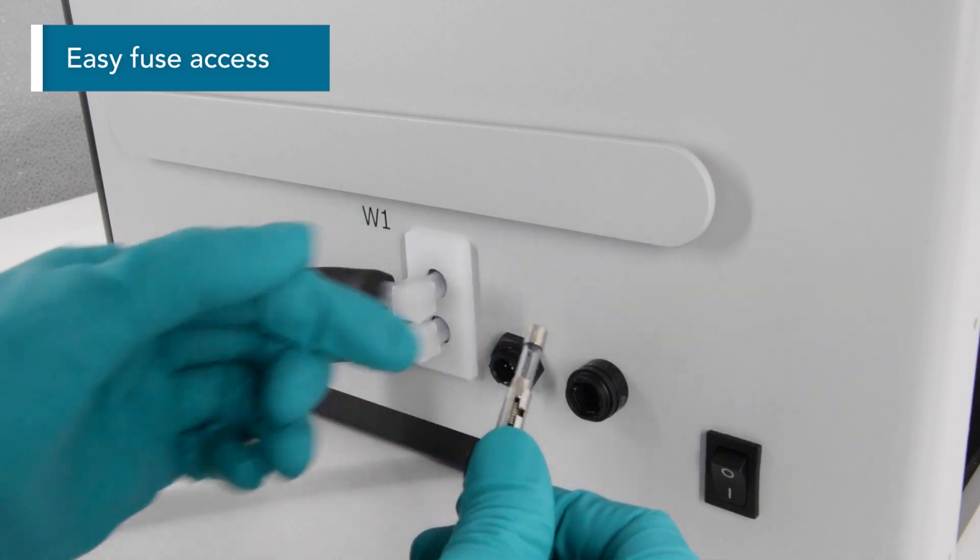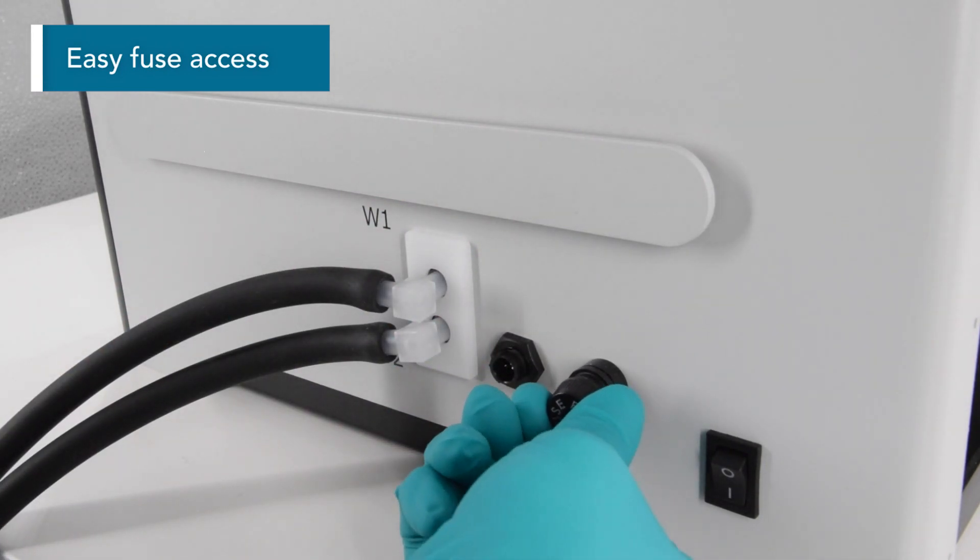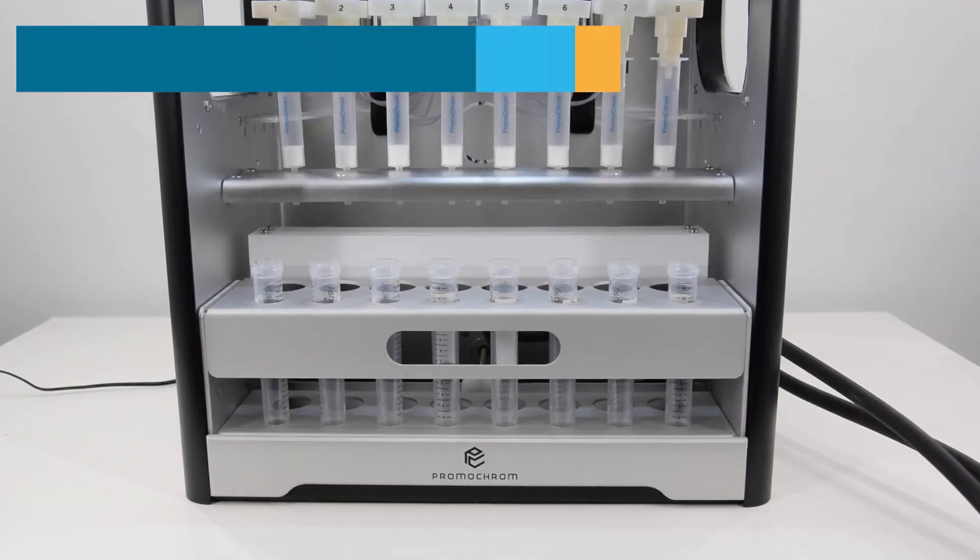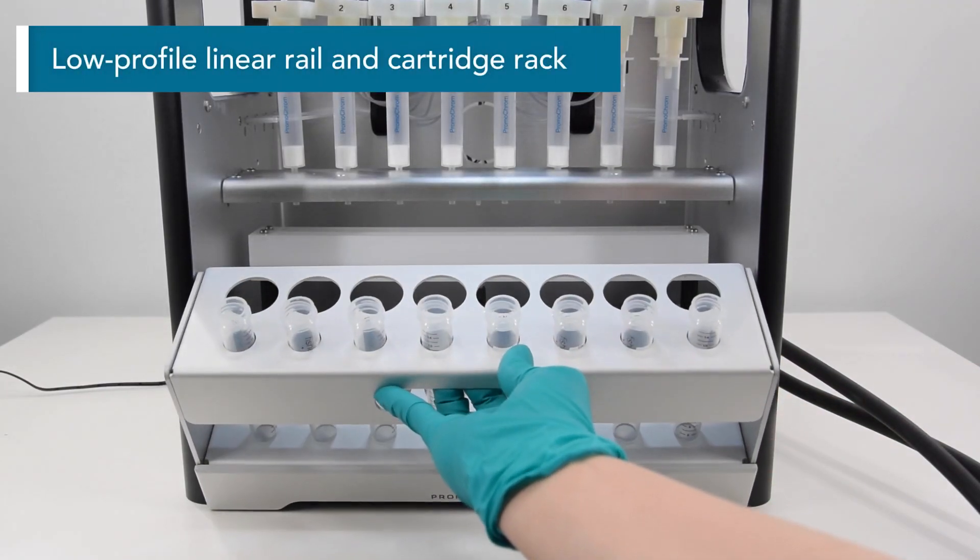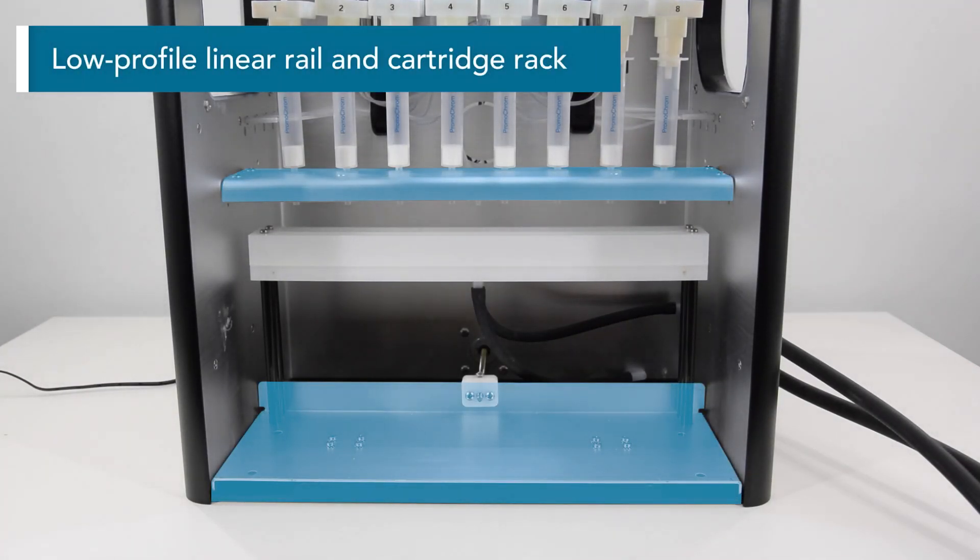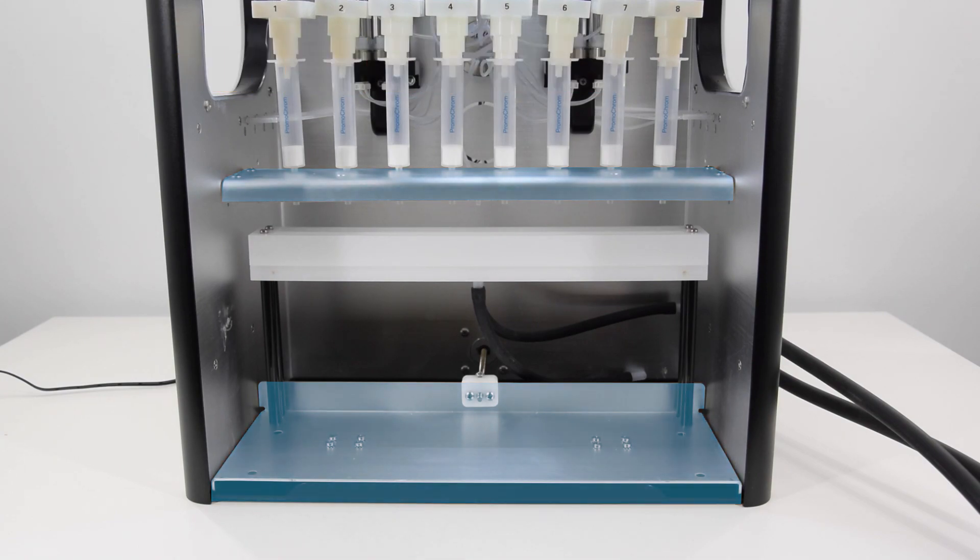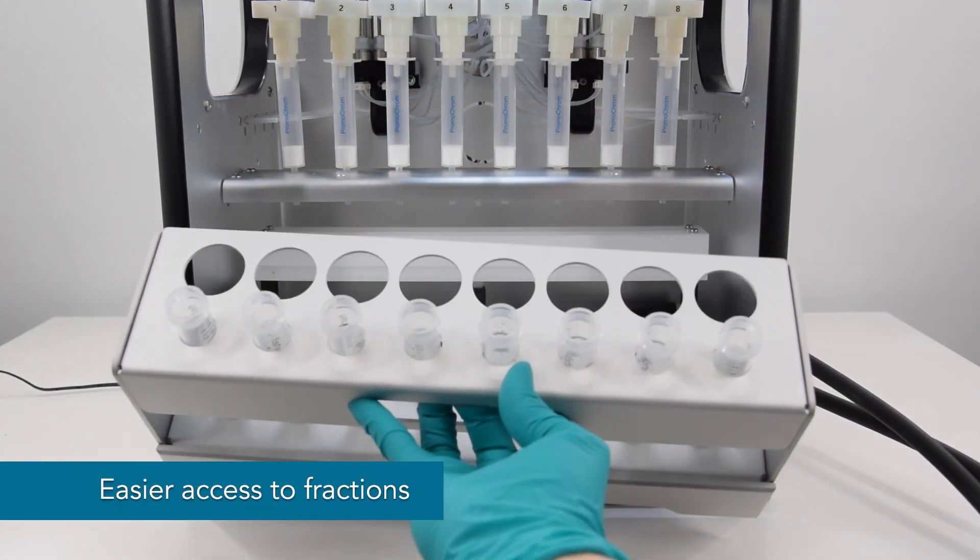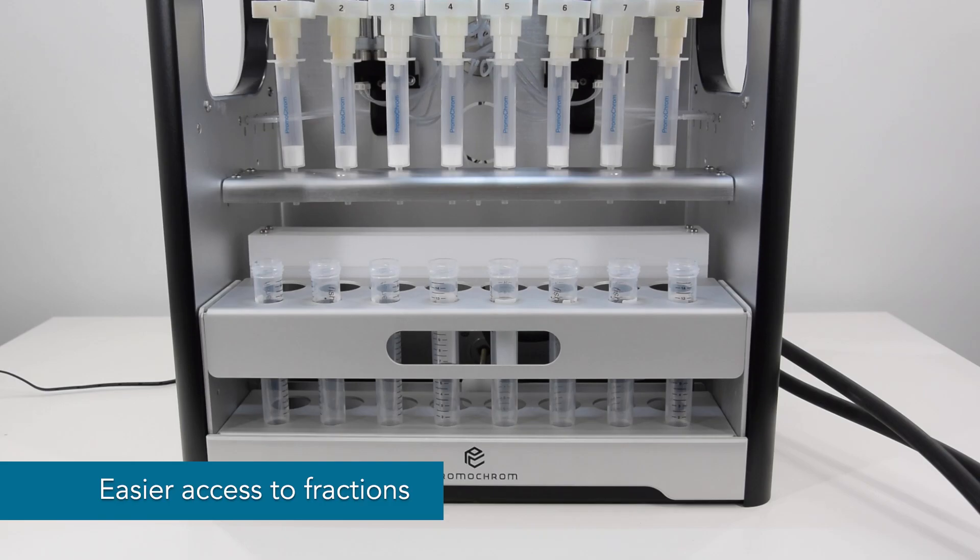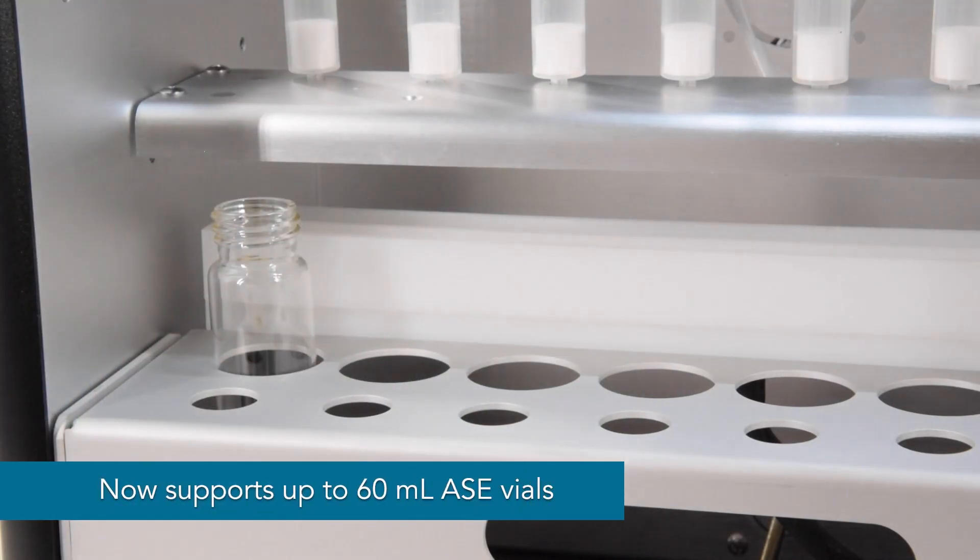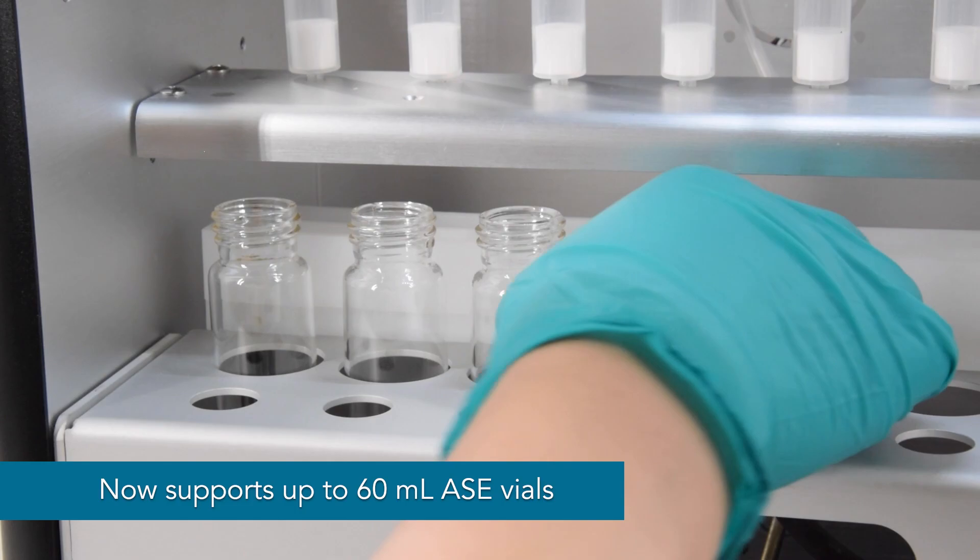Easily replace fuses from outside the system without opening the back panel. Switching to a low profile linear rail design for the bottom tray and smaller cartridge rack grants easier access to fractions. The additional space can now accommodate up to 60ml ASE vials.